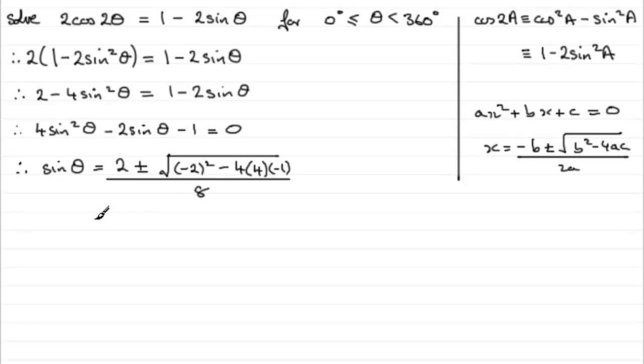Now, if you work this out, you're going to get two versions for sin θ. Sin θ is going to end up being 0.809016, and so on. If you take the plus version, if you take the minus version, you end up with -0.309016, and so on.